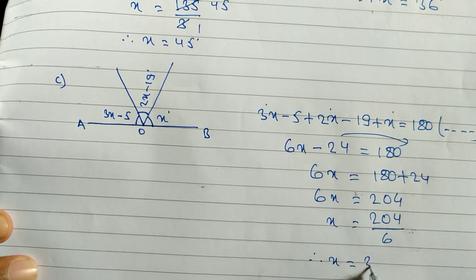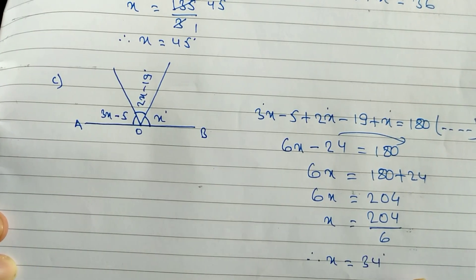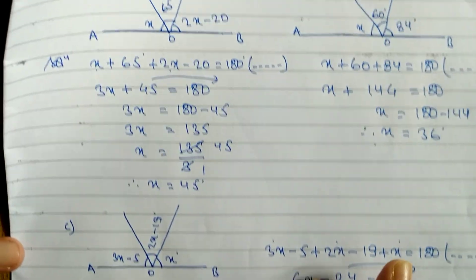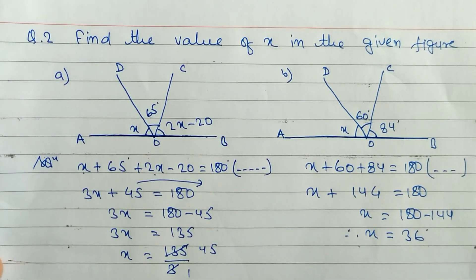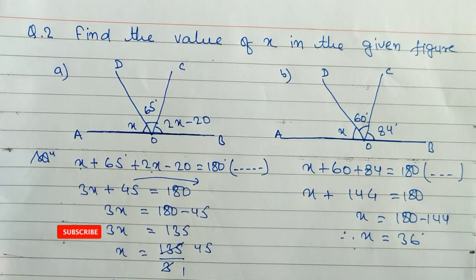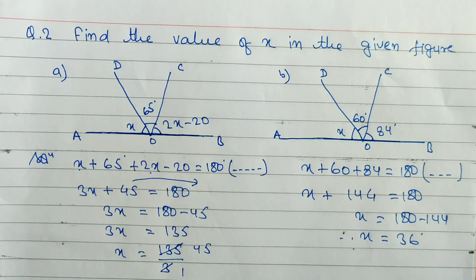So the value of x is 34 degrees. Hope you understand these three questions related to angles. If you understand, please hit the like button. If you are new to my channel, please consider subscribing and do not forget to hit the bell button to get notifications of upcoming videos. Thanks for watching till the end — keep supporting and keep sharing with your friends.